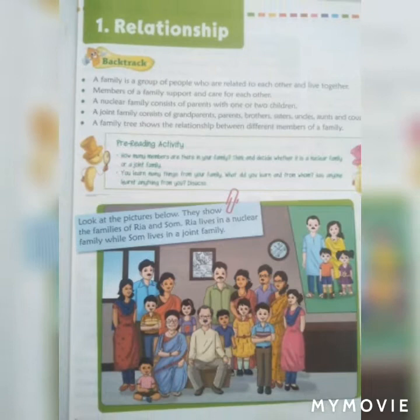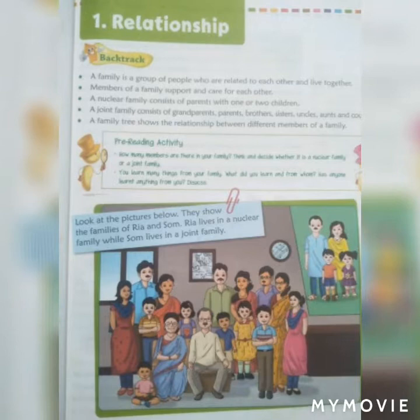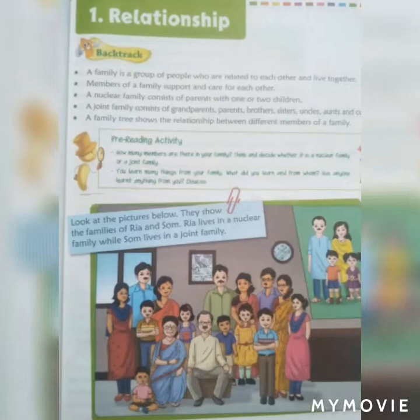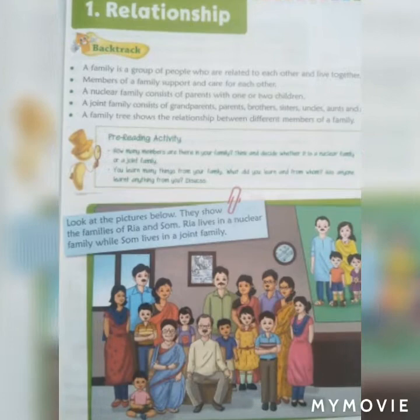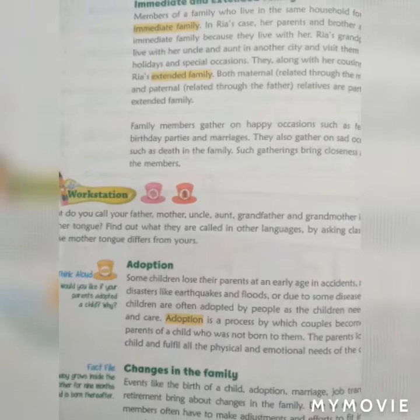A family tree shows how members are related to each other. Looking at the picture, you can see the families of Ria and Som. Ria lives in a nuclear family while Som lives in a joint family. Our next topic is immediate and extended family.